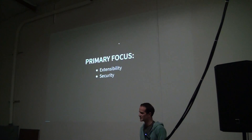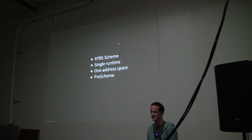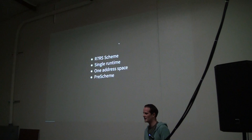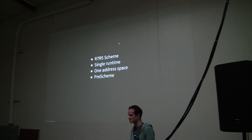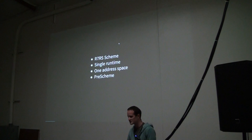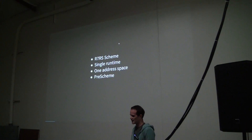The primary focus is extensibility and security. It's based on R7RS Scheme, which runs as a single runtime in one address space. The runtime is built on Pre-scheme, so you can't run Scheme without some support since it requires a garbage collector for things like closures. Pre-scheme is a subset of Scheme that doesn't include those things, but you can implement Scheme with it. The advantage is you can run it in any Scheme implementation. I actually do most of the development inside Scheme 48, which has a sort of emulation layer for Pre-scheme.